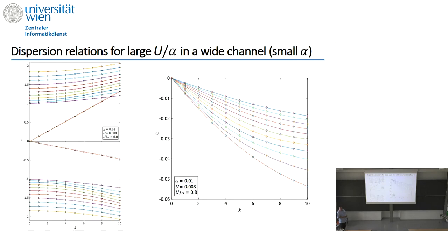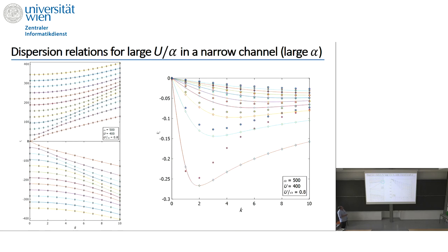But for larger U/alpha, where the analytical approximation cannot be obtained, we see some differences from the familiar dispersion relation picture. The Kelvin waves cross some of the Poincaré modes; the Poincaré modes do not converge at large k but fan out; and there is asymmetry between positive and negative Kelvin-like waves. For a narrow channel there are more differences: the convexity of the Poincaré waves changes, and the curves no longer match the analytical approximation.